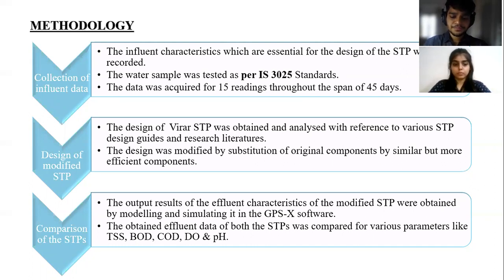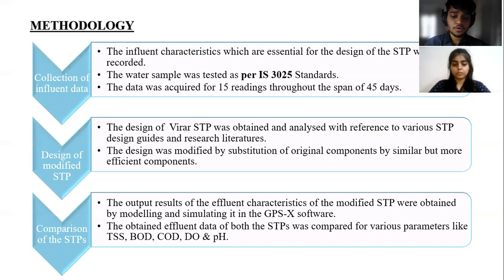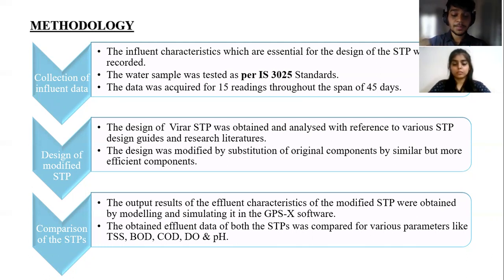Next, a modified STP was designed with reference to the Virar STP such that it can treat the influent water coming into the Virar STP but with a higher efficiency. The design was modified by upgrading and substitution of original components by similar but more potent components. The design was prepared with the help of STP design guides available online and through research literature. The output results of the effluent characteristics of the modified STP were obtained by modeling and simulating the design in the GPSX software. The effluent data obtained was then compared with the effluent data of the original STP for the water quality parameters mentioned.